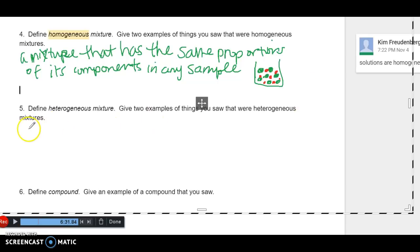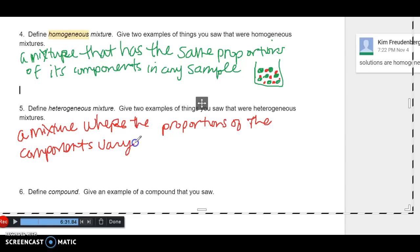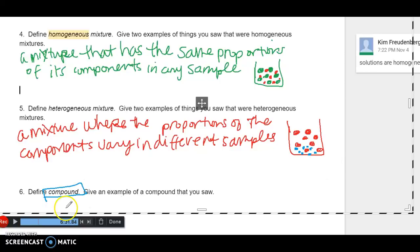As opposed to a heterogeneous mixture, which is a mixture where the proportions vary. Where the proportions of the components vary in different samples. That's where it's not really mixed together quite so cleanly. For example, we had - well, I'll let you remember what they were. So we have something like this, and then there's something like this. This would be a heterogeneous mixture because it's not evenly distributed. It doesn't have the same proportions in each part.